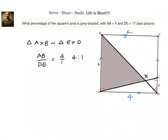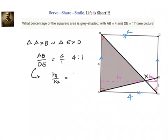If two triangles are similar, then their corresponding heights are also in the same ratio. Let us call the heights h1 and h2. Since the sides are in the ratio 4 to 1, the heights are also in the same ratio, giving us h1 divided by h2 equal to 4 by 1. We also know h1 plus h2 equals 4.